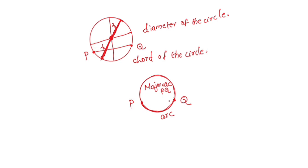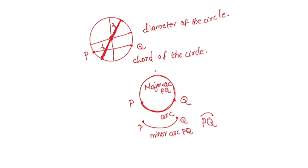The smaller arc is called the minor arc. If we denote the minor arc it is written as arc PQ, and if we denote the major arc it is written as arc PRQ, where R is a point on the major arc. So the major arc is arc PRQ and the minor arc is arc PQ.